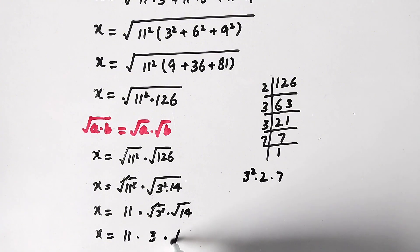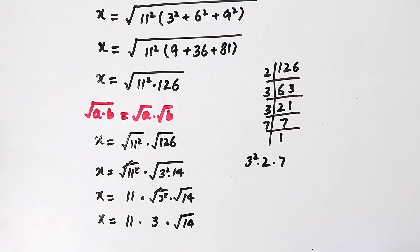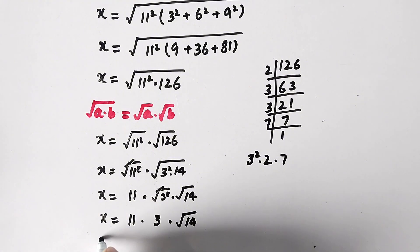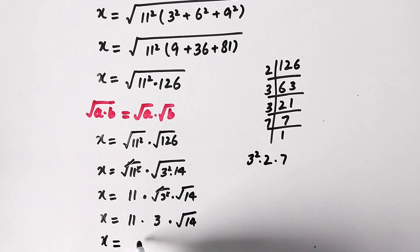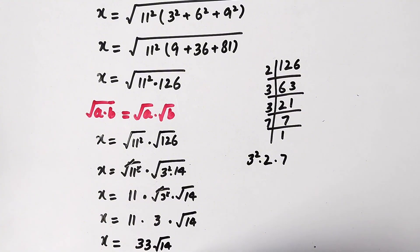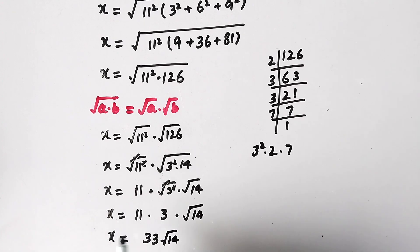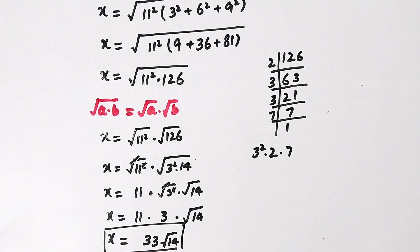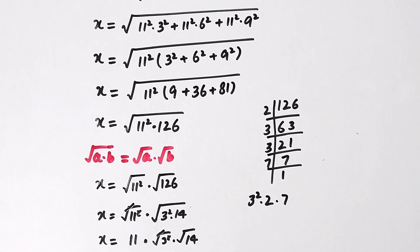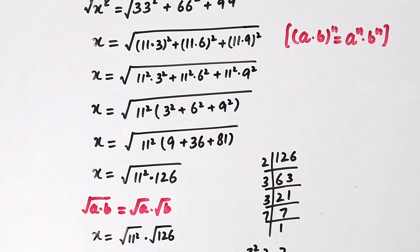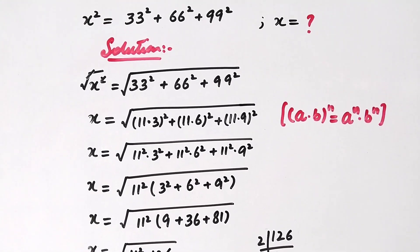So x equals 11 times 3 times the square root of 14, which gives x equals 33 times the square root of 14, and that is our final answer. I hope you liked the video — please subscribe to my channel for more videos. Thanks for watching, take care, bye!